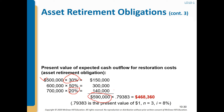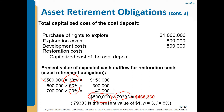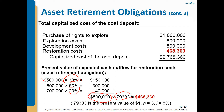Using the present value factor from the table where N = 3 and I = 8%, the restoration cost (asset retirement obligation) comes to $468,360. The total cost to be capitalized for the coal deposit is: purchase of rights $1,000,000, exploration cost $800,000, development cost $500,000, and restoration cost $468,360, for a total of $2,768,360.